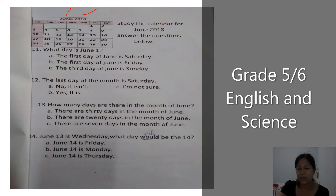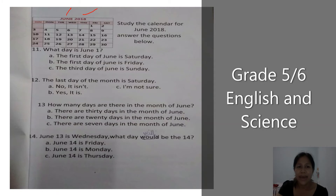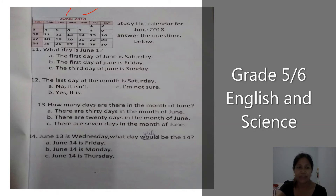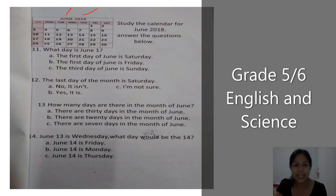Now it's time for you to select the correct answer for number eleven. A — the first day of June is Saturday. B — the first day of June is Friday. C — the third day of June is Sunday. Circle the letter of the correct answer. Now let's go to number twelve: the last day of the month is Saturday.